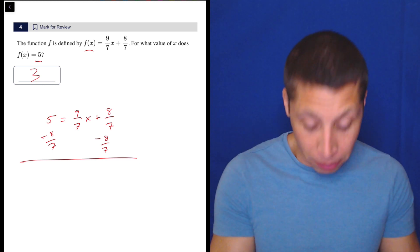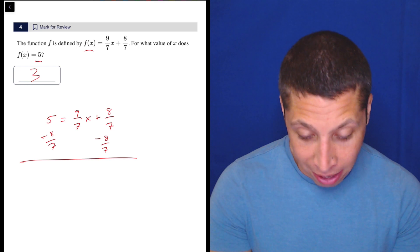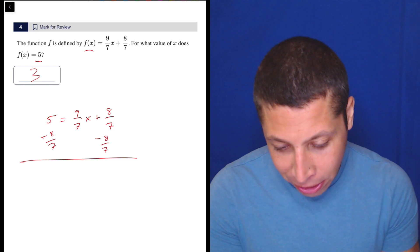I don't know. At this point, you're probably reaching for the calculator. You're doing 5 minus 8/7 in the calculator. It's a messy number. I could turn it into a fraction, I guess, if you know how to do that.